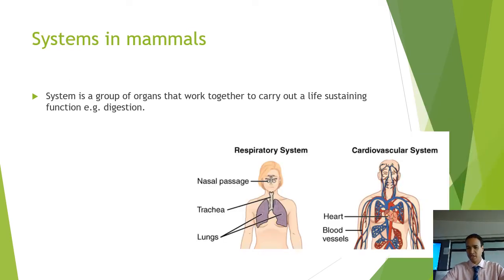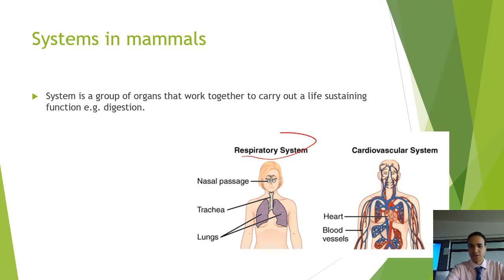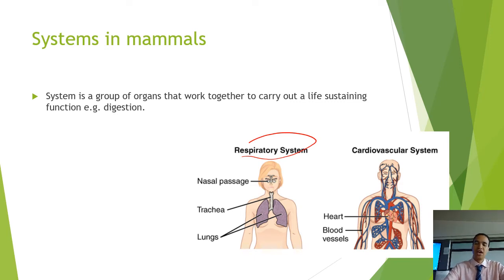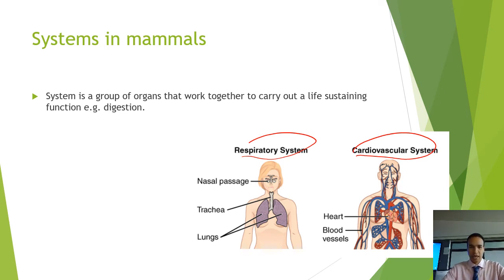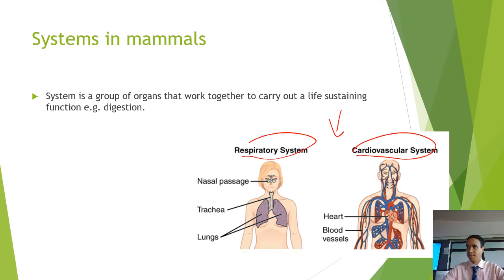Those organs then work together to form organ systems — you should be familiar with this from Year 8 and Year 9. For example, the respiratory system includes our nasal passage, trachea, and lungs — discrete organs working together. The cardiovascular system is made of all the blood vessels in your body and your heart. These two systems work together: we use the respiratory system to breathe in oxygen, and the cardiovascular system carries that oxygen to all the surrounding tissues and cells.